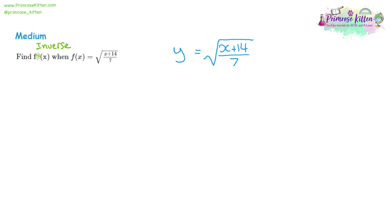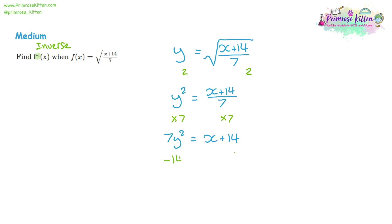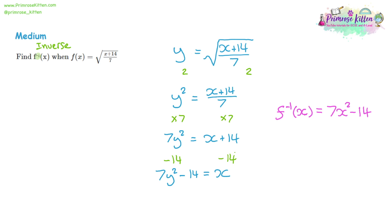So we're just going to rearrange it like we would rearrange an equation. Everything's being square rooted, so the first thing to do is to square both sides. That gives us y squared is equal to x plus 14 all over 7. It's usually easier to get rid of fractions, so let's multiply both sides by 7. That gives us 7y squared is equal to x plus 14. All we need to do now is take the 14 away from both sides: 7y squared take away 14 is equal to x. Now we write this as a function. The inverse function of x is equal to 7x squared minus 14 — at the end I just put the x back in.